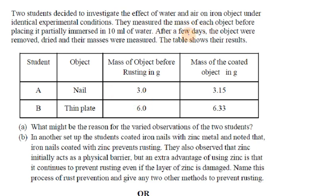After a few days, the objects were removed and the mass was measured. The nail before rusting was 3 grams; after rusting it increased by 0.15 grams. The thin plate was 6 grams before rusting; after rusting it increased by 0.33 grams.